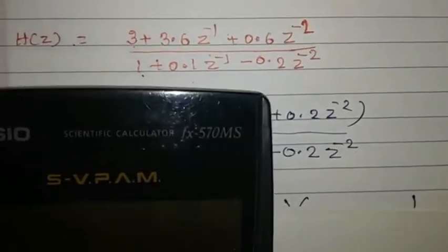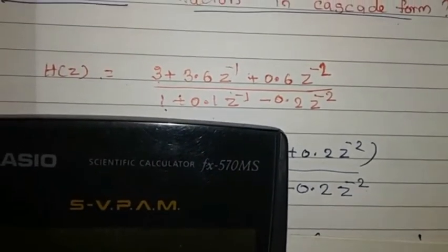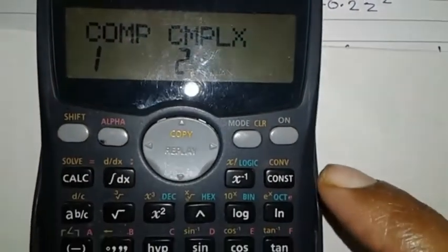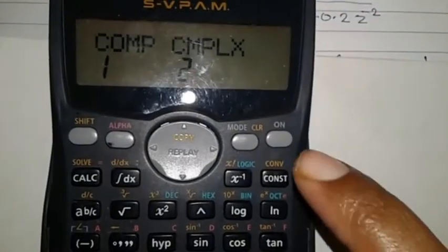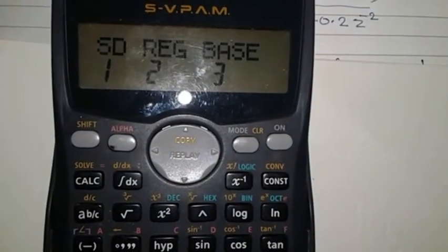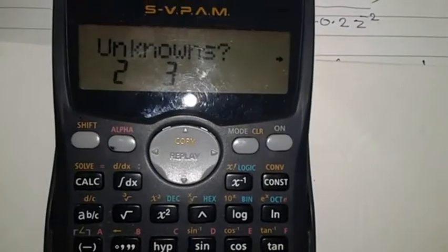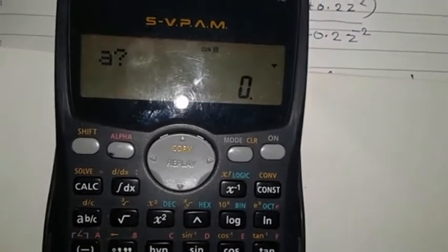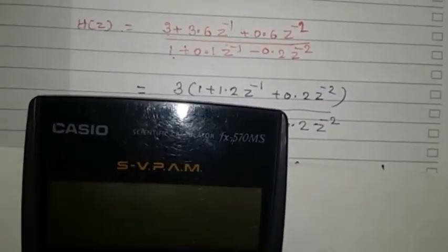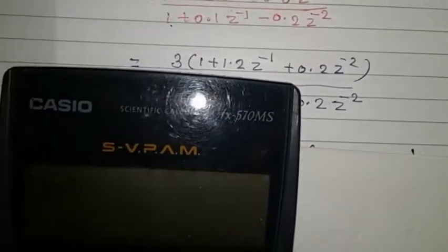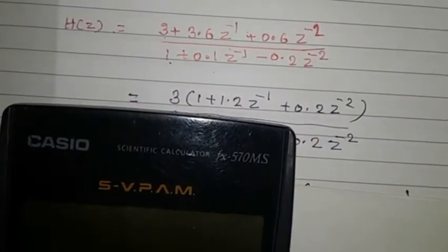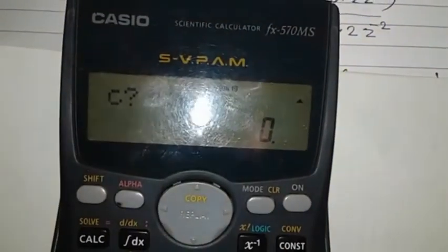The numerator polynomial: we factor using degree 2. We choose a value here. If we choose a value, the a value is 1. If we choose b value is 1.2, then b value is 1.2. Then c value is 0.2, then c value is 0.2.